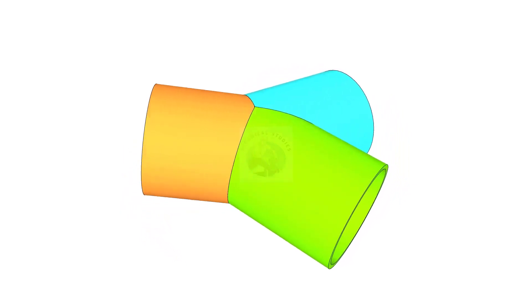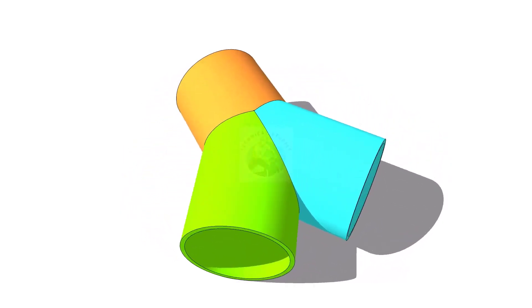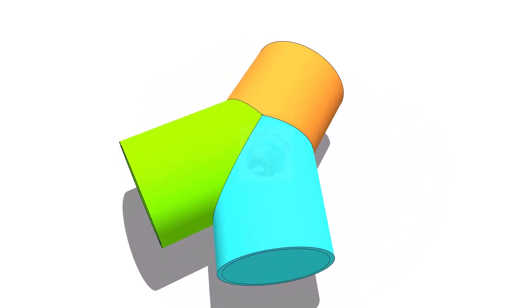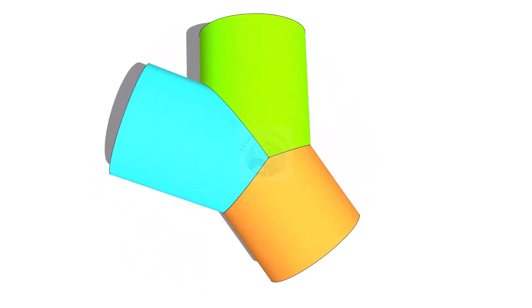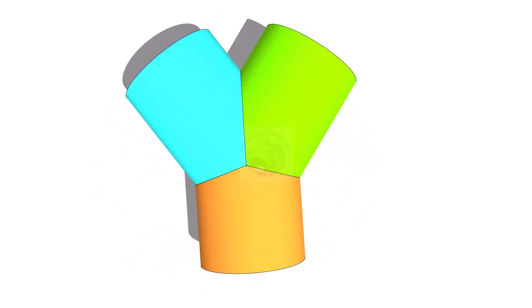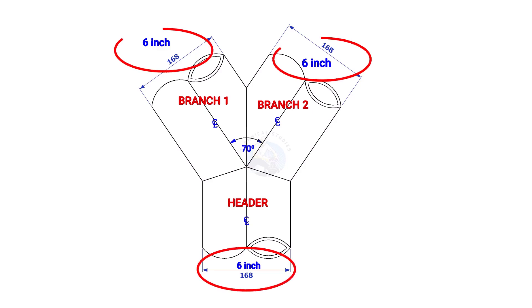Welcome to the technical studies. In this video we will learn how to lay out a Y branch. The size of the Y branch in this example is 6 inches and the including angle is 70 degrees.